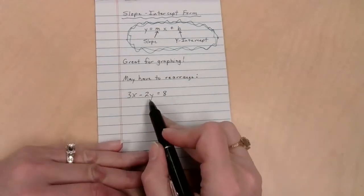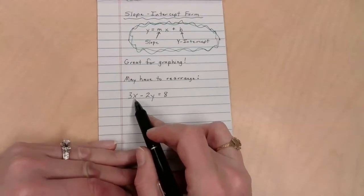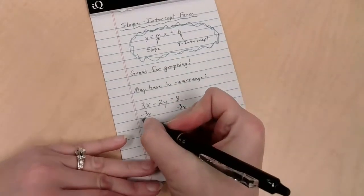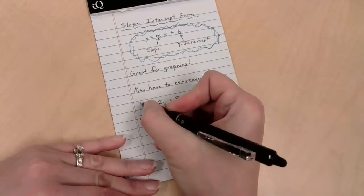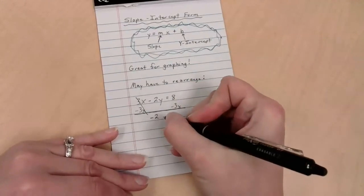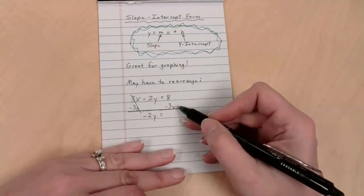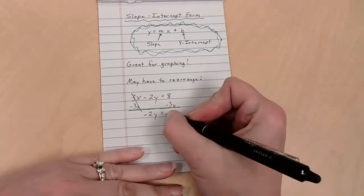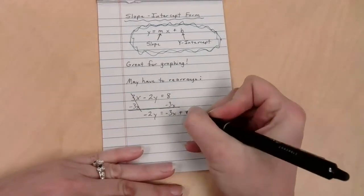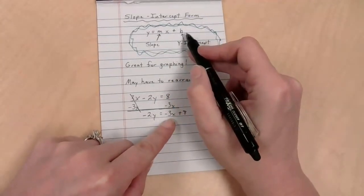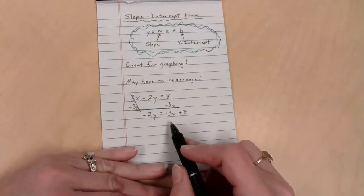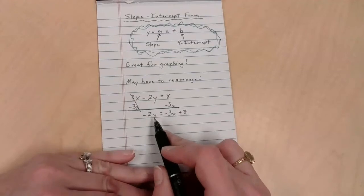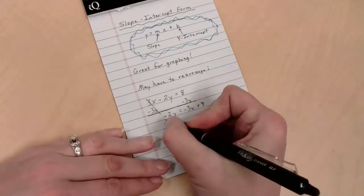Let's just do some rearranging. I need the y by itself, which means I need this chunk to go away. Minus 3x and minus 3x. Always doing the same thing on both sides. That's gone. This is a minus 2y, so we're going to view it as negative 2y equals, these are not like terms. My number with my x is negative 3x, and that's a positive 8, so I'm going to go with plus 8.